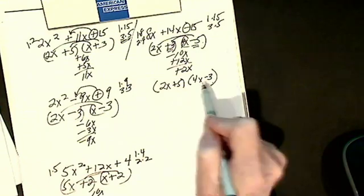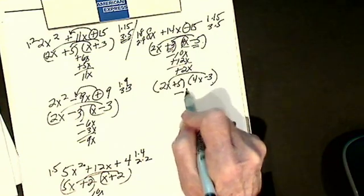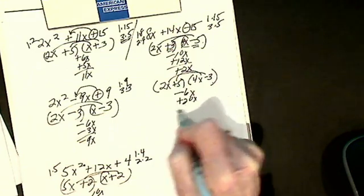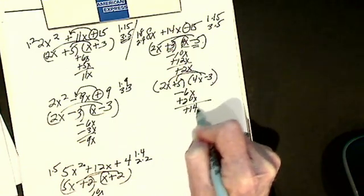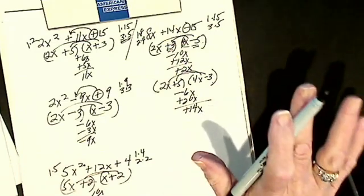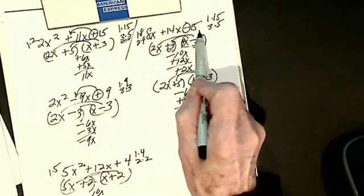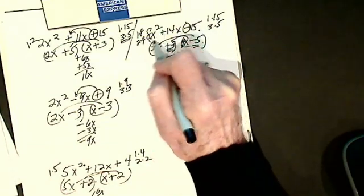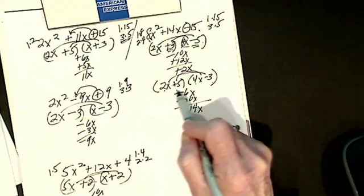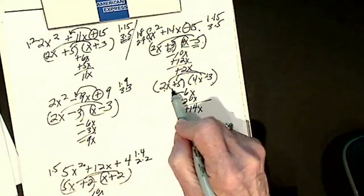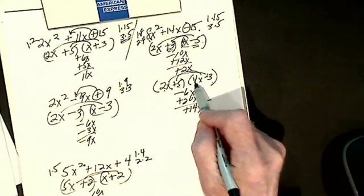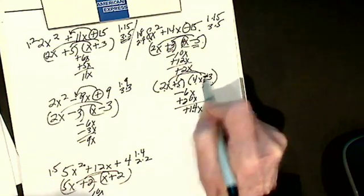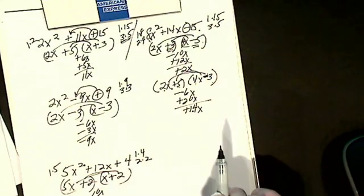I check my outers. I get minus 6x. I check my inners. I get plus 20x. I get plus 14x. Perfect. Now I'll check my first and last to make sure. 2x times 4x will give me my 8x squared. Over here, I'm going to get minus 6 plus 20, I get my plus 14. I have a minus 3 and a plus 5, I get minus 15. So this is my correct answer.